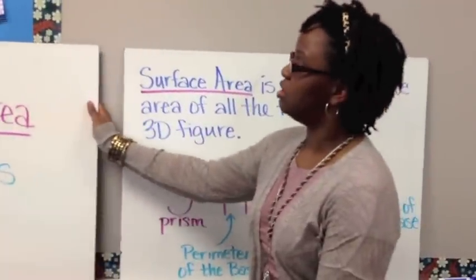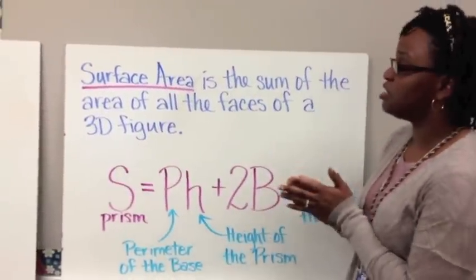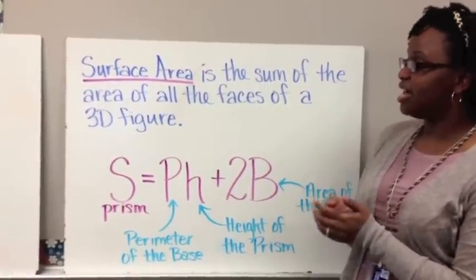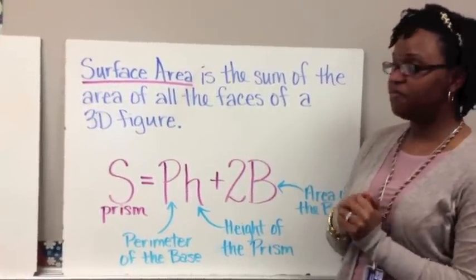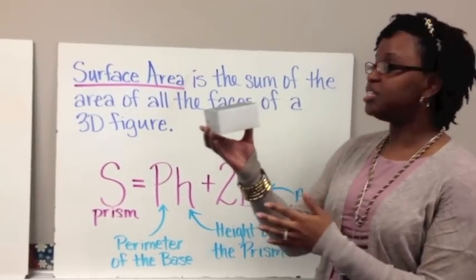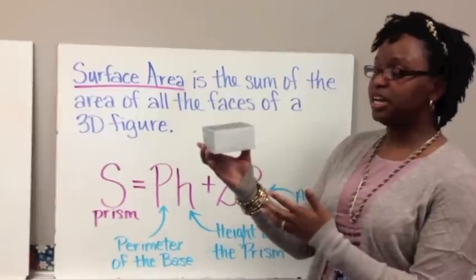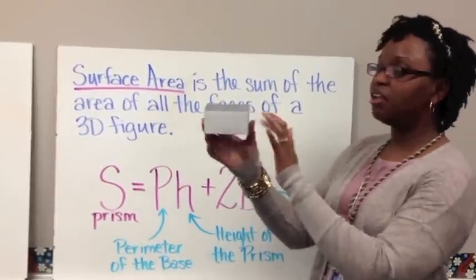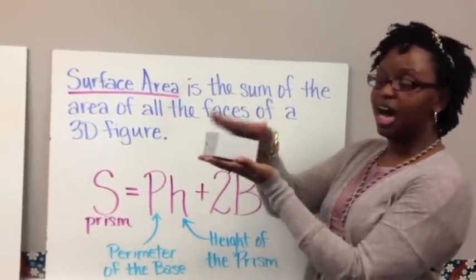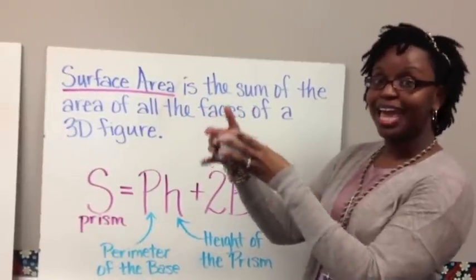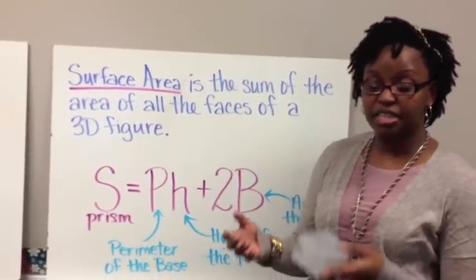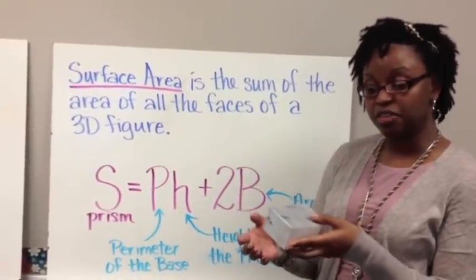So what is surface area? Surface area is the sum of the area of all the faces of a three-dimensional figure. So with that prism, surface area would be the sum of all of the different faces that you see — the top and bottom, the front and back, and the sides.